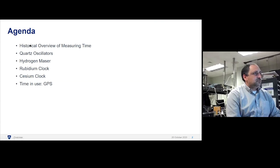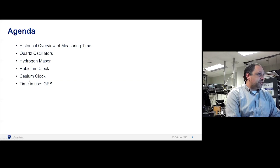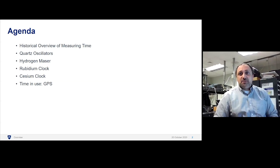A rough agenda is we'll talk a little bit about how we've measured time, discuss the quartz oscillator, which is still, even with atomic clocks, a critical instrument. We'll discuss three types of atomic clocks: the hydrogen maser, the rubidium clock, and the cesium clock. Then we'll close with how atomic clocks are used with GPS and get a sense of why you need an atomic clock for GPS.